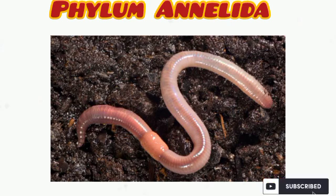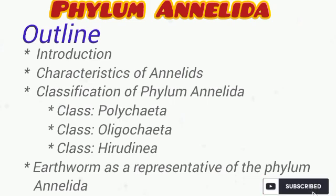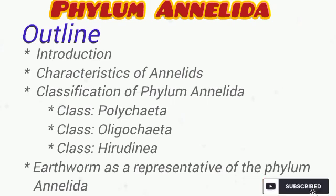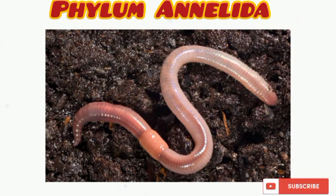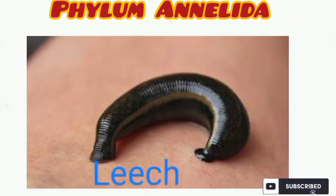Welcome to Science Assets. In today's class we're talking about the phylum Annelida, following this outline: introduction to the phylum Annelida, their characteristics, classification — covering class Polychaeta, class Oligochaeta, and class Hirudinea. We'll also discuss the earthworm as a representative of the phylum Annelida. When the word Annelida is mentioned, what comes to mind? Earthworm, leech, and some freshwater species.